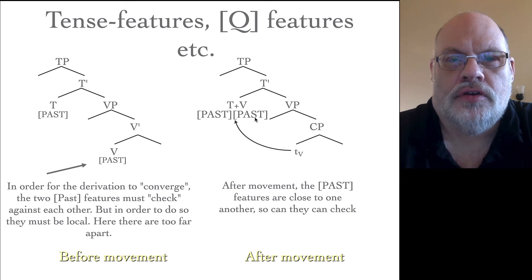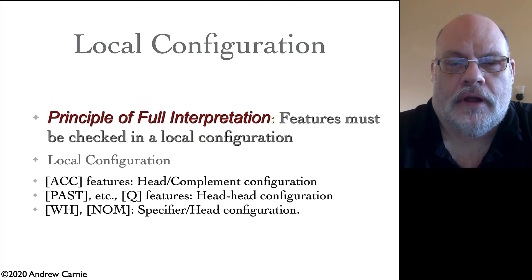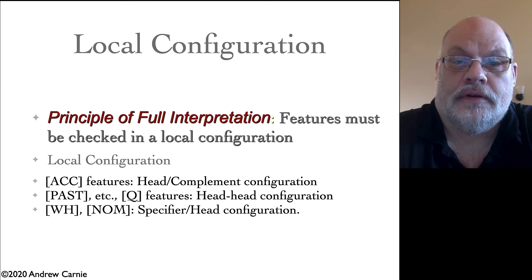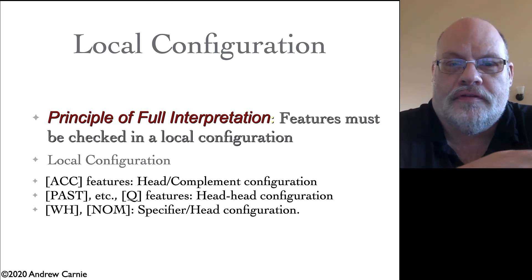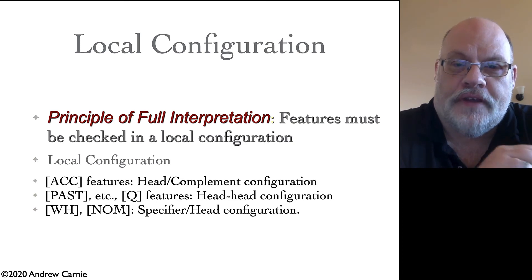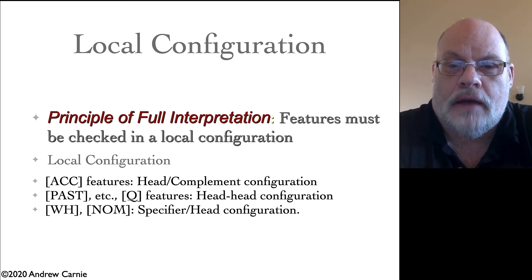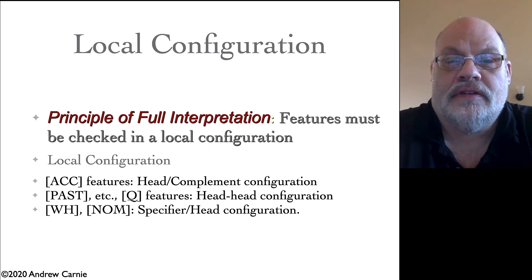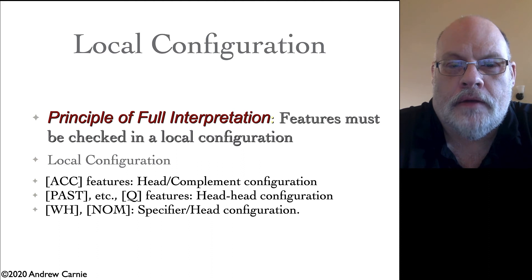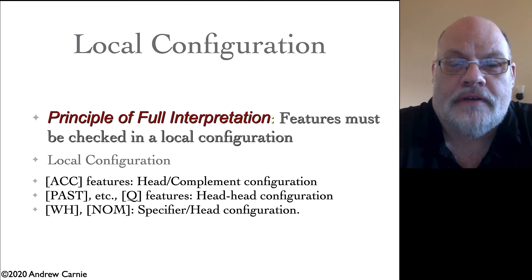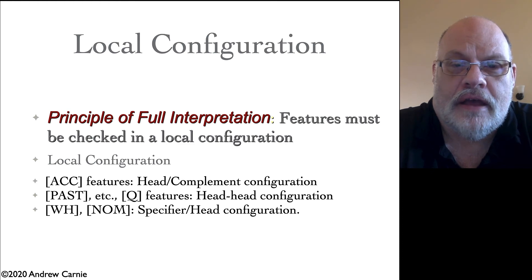Let's see if we can actually unify the rules and the constraints. First, let's try to unify constraints like the WH criterion, the case filter, and requirements on tense and Q features into a single principle. We can conflate those three constraints into a single constraint called the Principle of Full Interpretation, or just Full Interpretation, typically abbreviated FI. This constraint says features must be checked in a local configuration — meaning make sure features are close to one another by the end of the derivation, and you will be good.